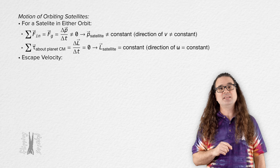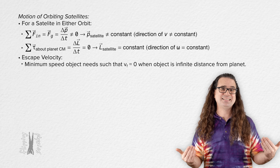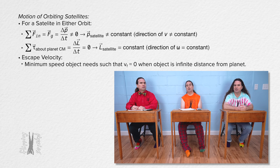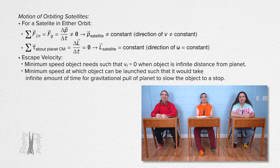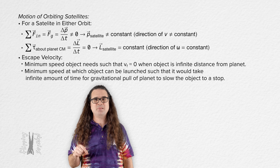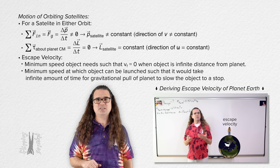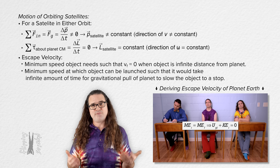Escape velocity is the minimum speed an object needs such that its final velocity will be zero when the object is an infinite distance from a planet. More precisely, escape velocity is the minimum speed at which an object can be launched such that it would take an infinite amount of time for the gravitational pull of the planet to slow the object to a stop — meaning the object would not fall back down to the surface. Escape velocity ignores any frictional effects caused by the atmosphere. You should know how to derive escape velocity; you are welcome to look over the escape velocity derivation video for a refresher.